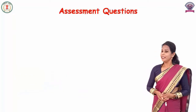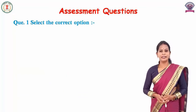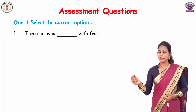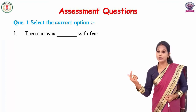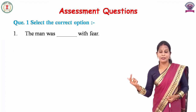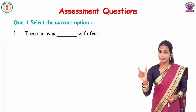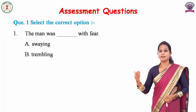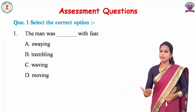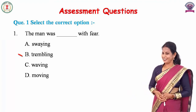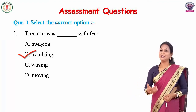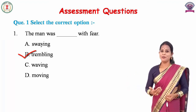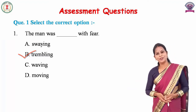Now it's time for assessment questions. Select the correct options. Question 1: 'The man was ___ with fear.' The options are A. Swaying, B. Trembling, C. Wearing, D. Moving. Yes, the correct answer is B — Trembling. The man was trembling with fear.